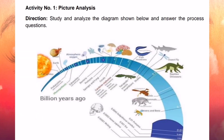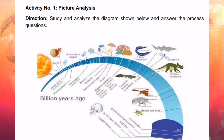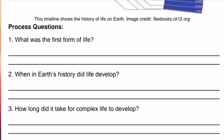Now let's have an activity: creature analysis. Study and analyze the diagram showing the timeline of the history of life on Earth and answer the process questions. The first question: What was the first form of life? The correct answer is prokaryotes.